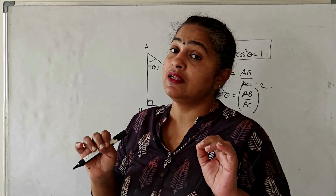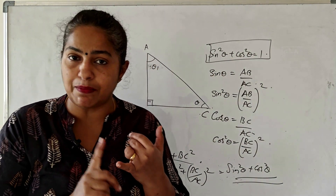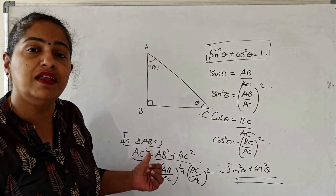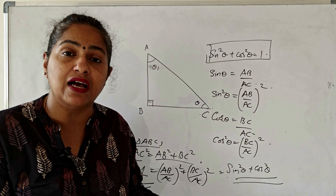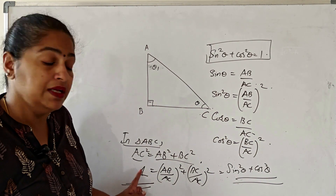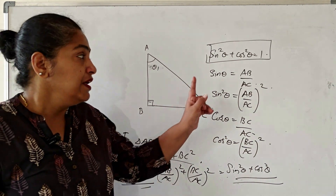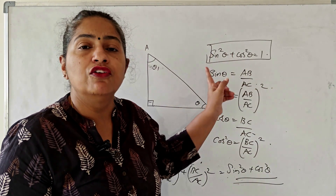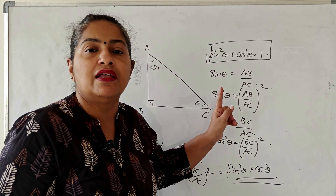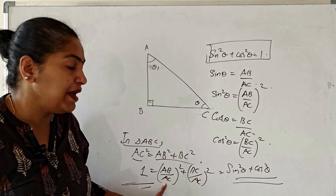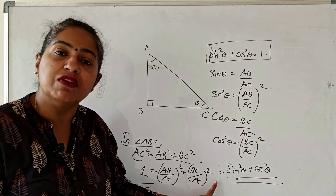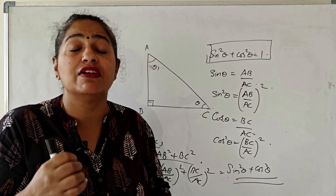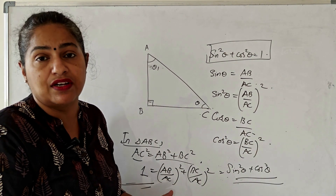We are just using the basics of the right angle triangle. First, write the Pythagoras theorem, then divide the entire LHS and RHS by the hypotenuse squared. We need to prove sin²θ + cos²θ = 1, so we write what sin²θ and cos²θ are, and find that the RHS is actually sin²θ + cos²θ. It is a very simple proof.